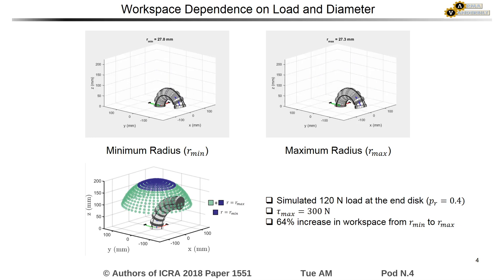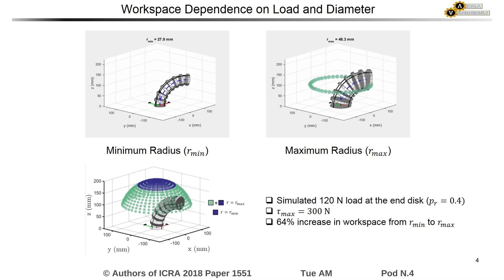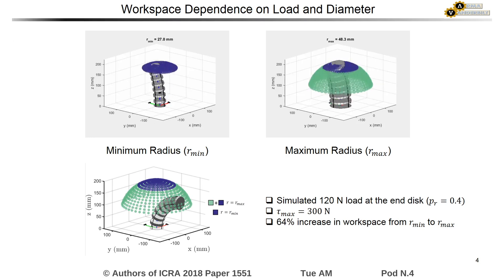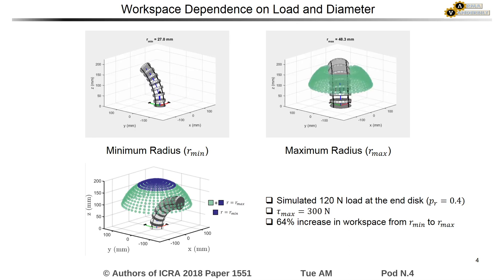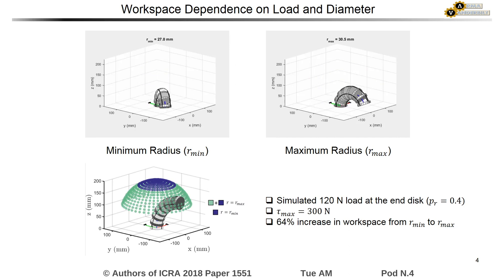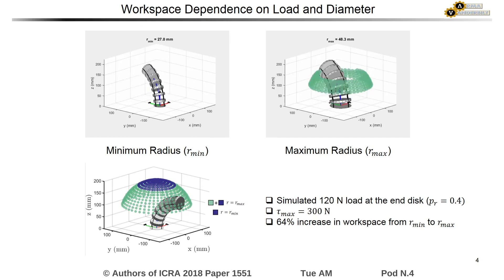On the left, the segment is simulated with its minimum diameter, while on the right, it is simulated with its maximum diameter. Note that the maximum diameter is reduced for large bending angles due to the constraints imposed by the interference between the spacer disks. These results show that allowing the diameter to vary increases the achievable workspace of the robot for a given external load.